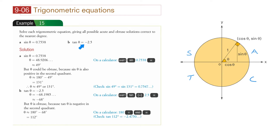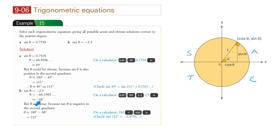For tan theta equals minus 2.5, tan is negative in quadrant 2 and quadrant 4. However, we have to exclude quadrant 4 because acute angles are in quadrant 1, obtuse angles are in quadrant 2, and reflex angles are in quadrants 3 and 4. The calculator gives minus 68 degrees. If it's minus degrees, the angle goes clockwise — down 68 degrees.